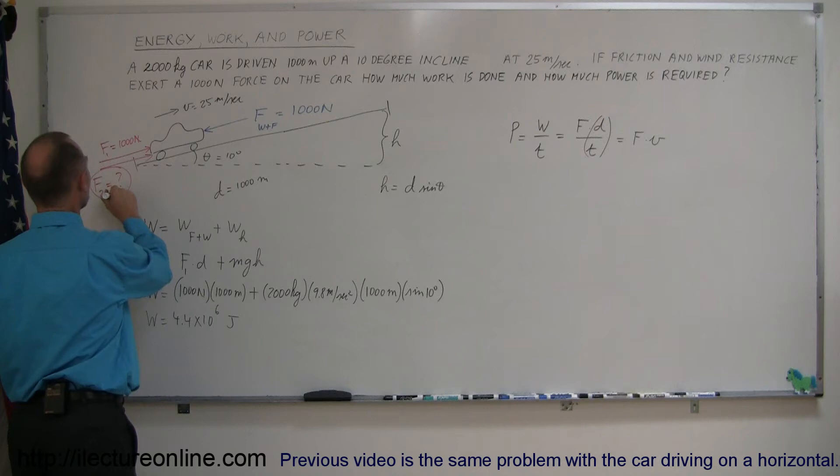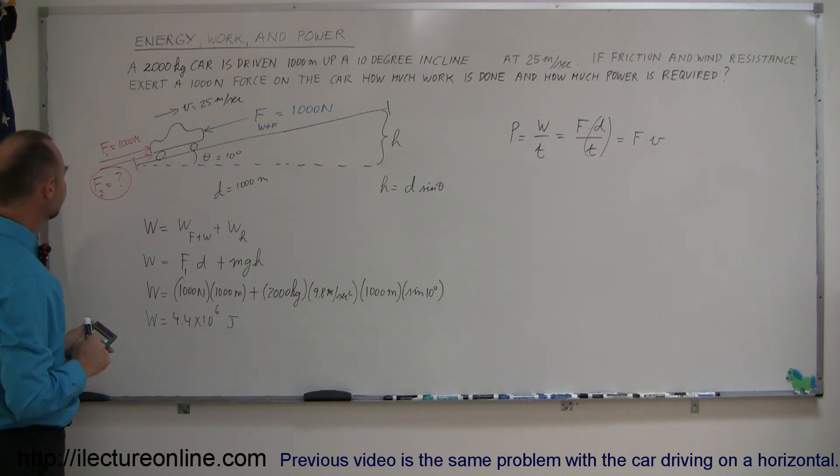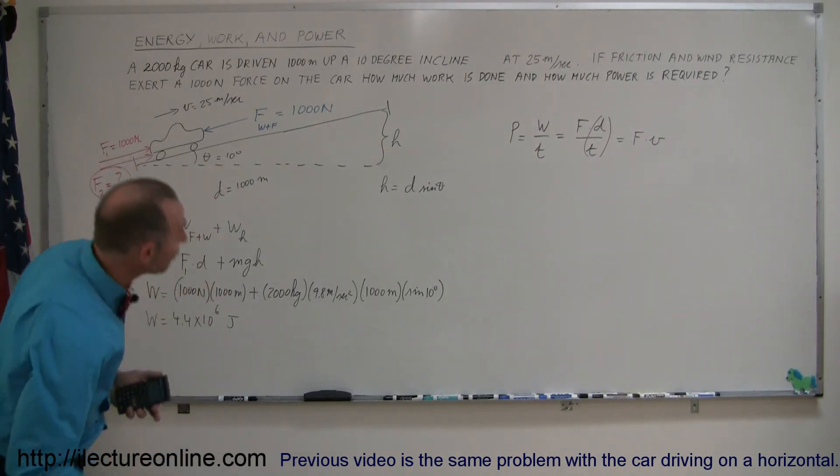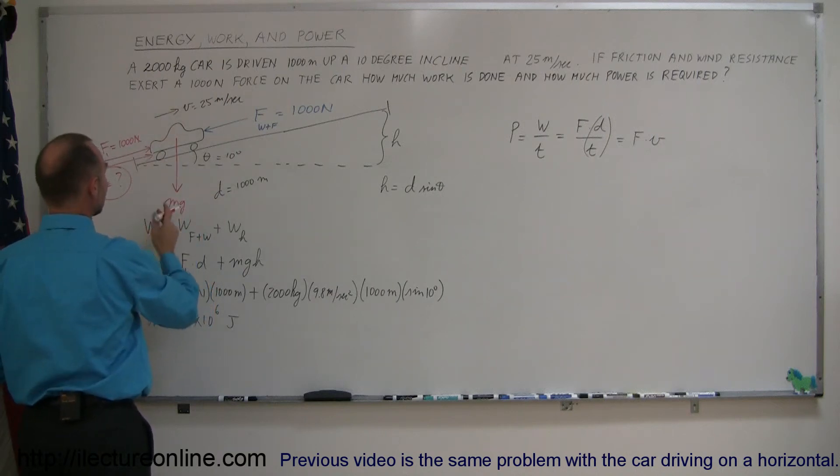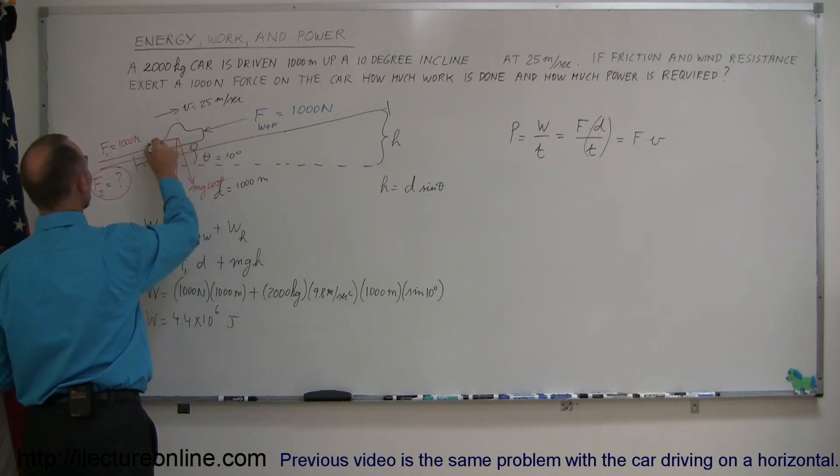So, how much force is required to push this car up the hill? I think we can go back to what we learned in a previous lesson on Newton's second law. Now, we do know that the car has weight, mg, which acts straight down. Since we're going up an incline, we have the perpendicular component to the surface, which is mg cosine of theta. And then we have the horizontal component, which is mg sine of theta.